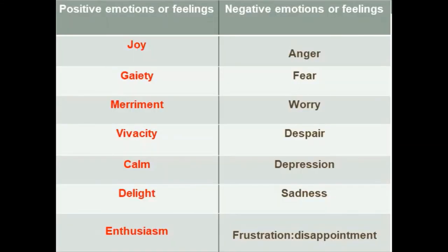Here we have a table that shows positive emotions and negative emotions. Let's start with positive emotions: we have joy, gaiety, merriment, vivacity, satisfaction, calm, delight, and enthusiasm. Joy means happiness; gaiety is cheerfulness; merriment is soror; vivacity means liveliness.